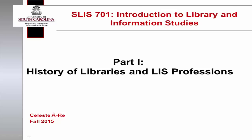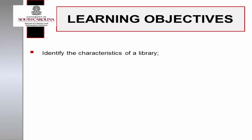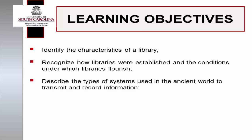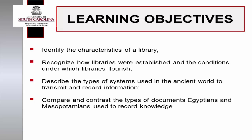By the end of this discussion, you will be able to identify the characteristics of a library, recognize how libraries were established and the conditions under which libraries flourish, describe the types of systems used in the ancient world to transmit and record information, and compare and contrast the types of documents Egyptians and Mesopotamians used to record knowledge.